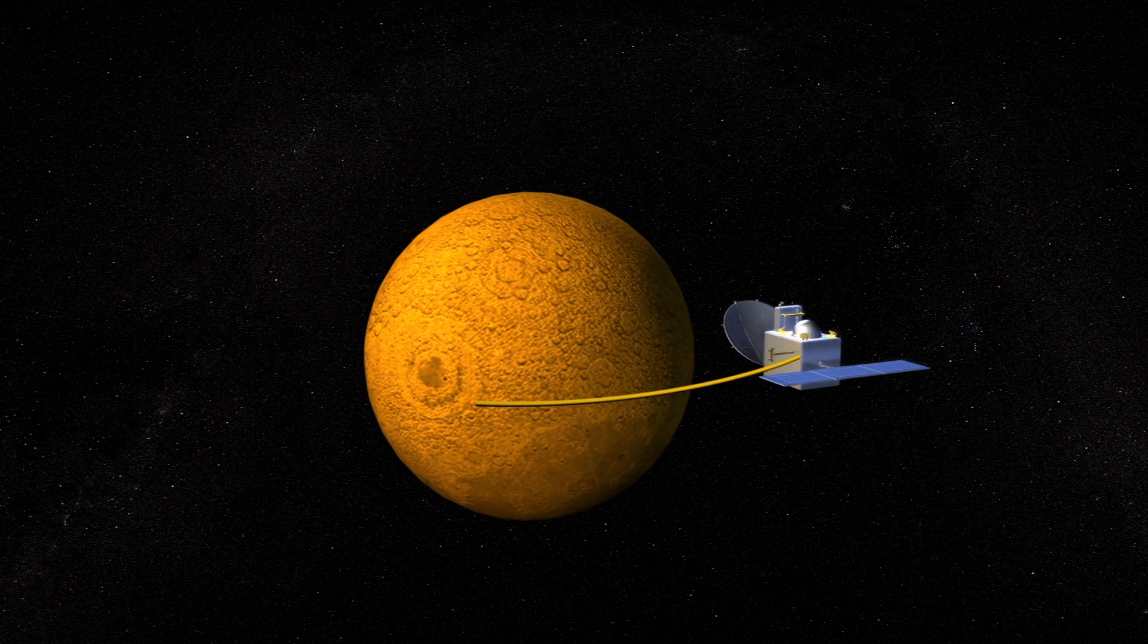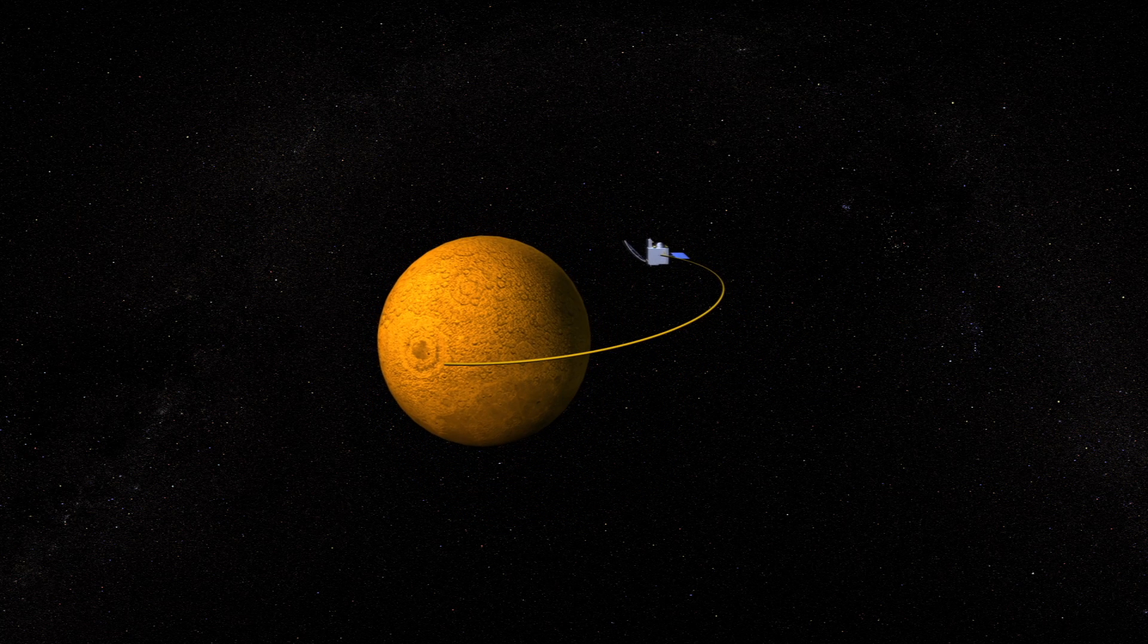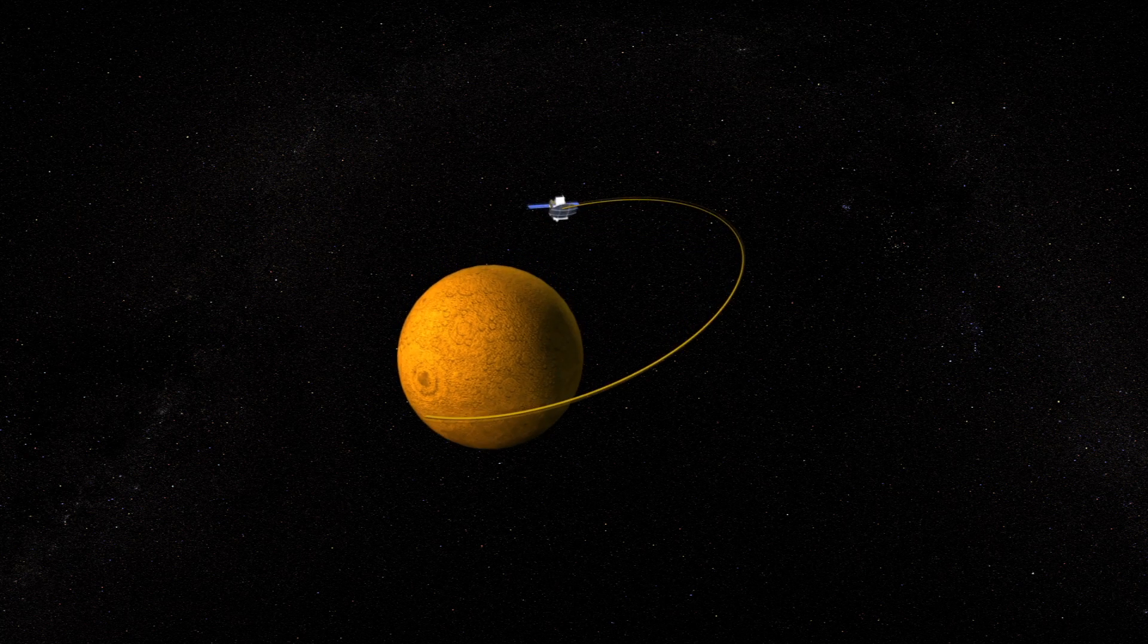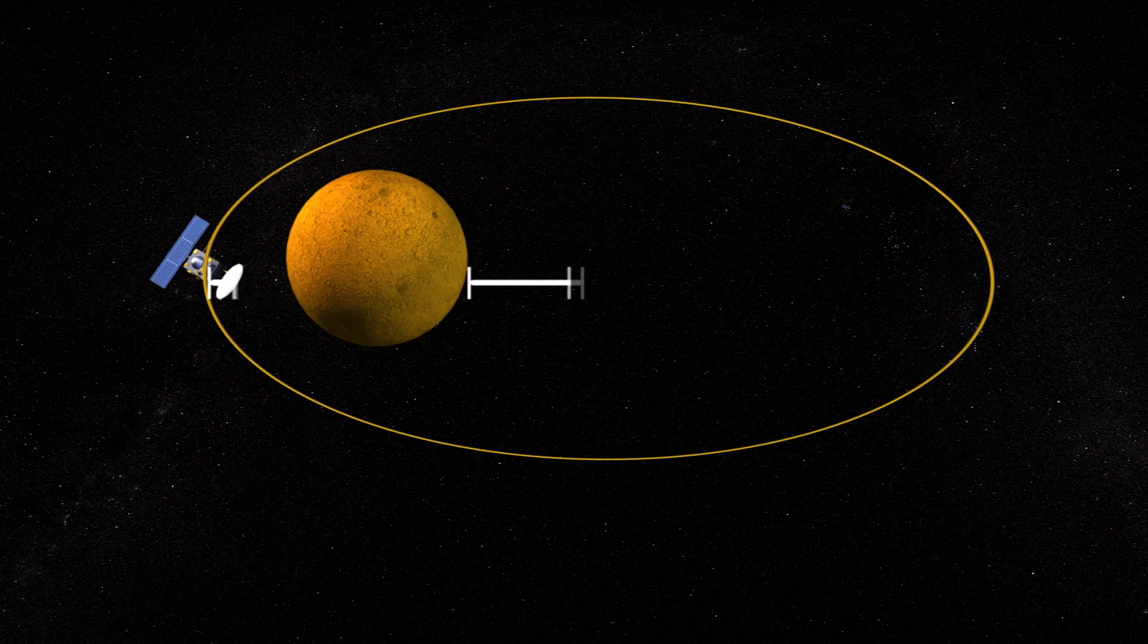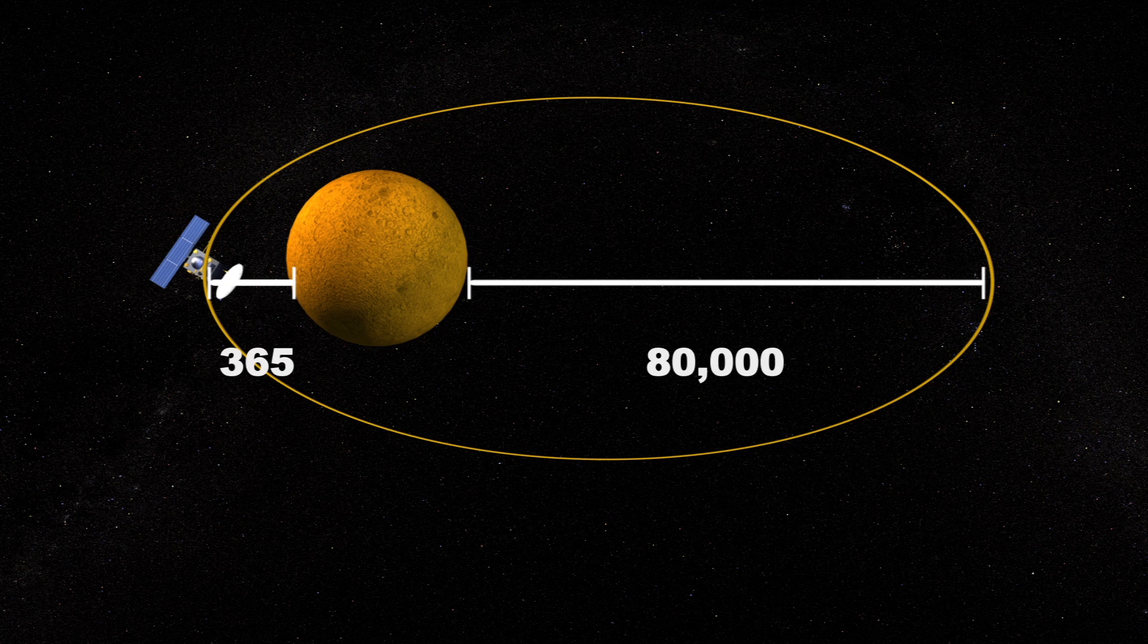The Mars orbiter mission design calls for a highly elliptical 77-hour orbit that will bring the probe as close as 365 kilometers and as far away as 80,000 kilometers from the planet.